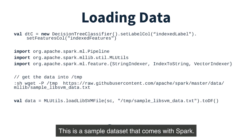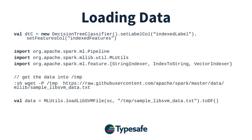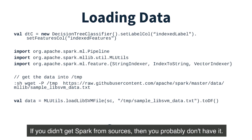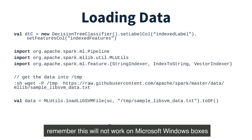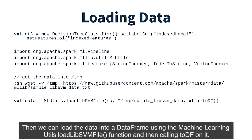This is a sample dataset that comes with Spark. If you didn't get Spark from sources, you probably don't have it. From a Spark notebook, you can get it with the shell command wget. Remember, this will not work on Microsoft Windows boxes. Then we can load the data into a DataFrame using the machinelearningutils.loadlibsvm file function and then calling toDataFrame on it.